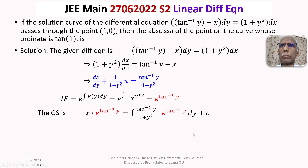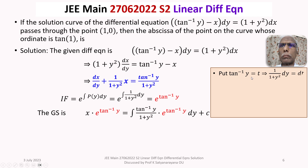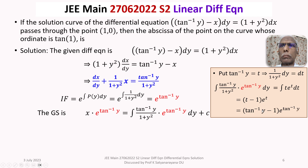To evaluate this integral, substitute tan inverse y equals t, so that 1/(1 plus y squared) dy equals dt. The integral becomes the integral of t times e to the power t dt. Using integration by parts, this standard integral evaluates to (t minus 1) times e to the power t. Replacing t by tan inverse y gives (tan inverse y minus 1) times e to the power tan inverse y.